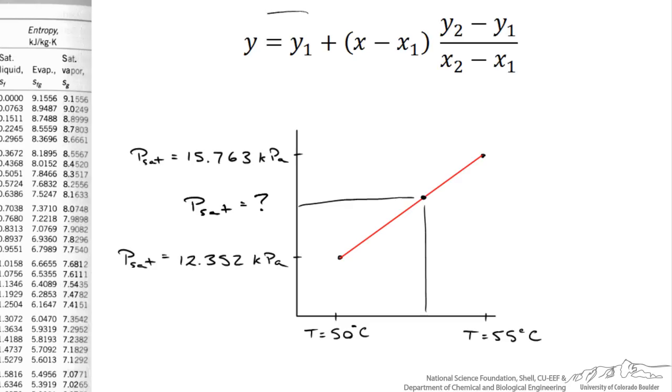So the equation I drew up here is a general form for linear interpolation between two known data points. So the Y in this case is analogous to our saturation pressure and X is analogous to the saturation temperature. Let's call this point 1 and we will call this point up here point 2.